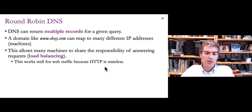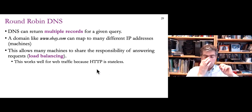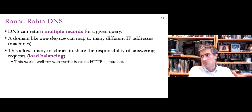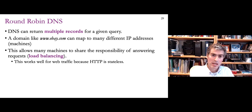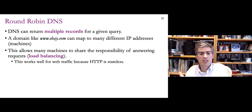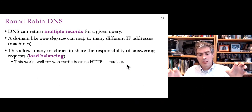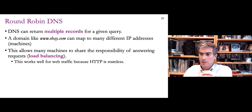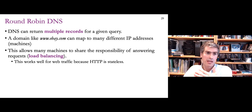This works really well for web traffic because HTTP is stateless. If my web browser is interacting with one IP address and the DNS record expires, I might do a new DNS request and get a different answer, so my requests start going to a different server. That's okay with HTTP because every request is self-sufficient — it can go to any one of many servers and has all the information needed to answer it, including cookies that give hints about the user's history.